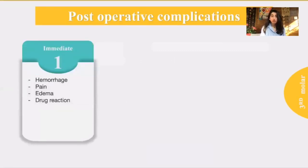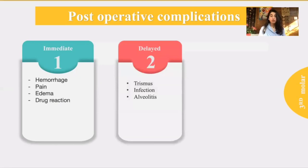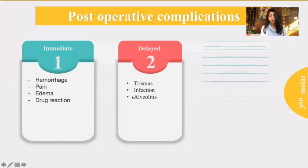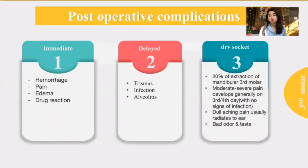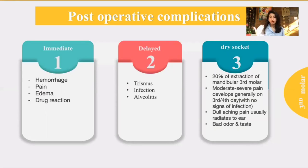For postoperative complications, there are immediate complications: hemorrhage, pain, edema due to excessive tooth manipulation, and drug interactions. Delayed complications include trismus, which is a common temporary complication relieved after three to four days, and infection or alveolitis, which is uncommon. Dry socket is a common complication, occurring in one in five patients. Symptoms are moderate to severe pain developing around the third to fourth postoperative day, with pain radiating to the ear, and the most common sign is bad odor.